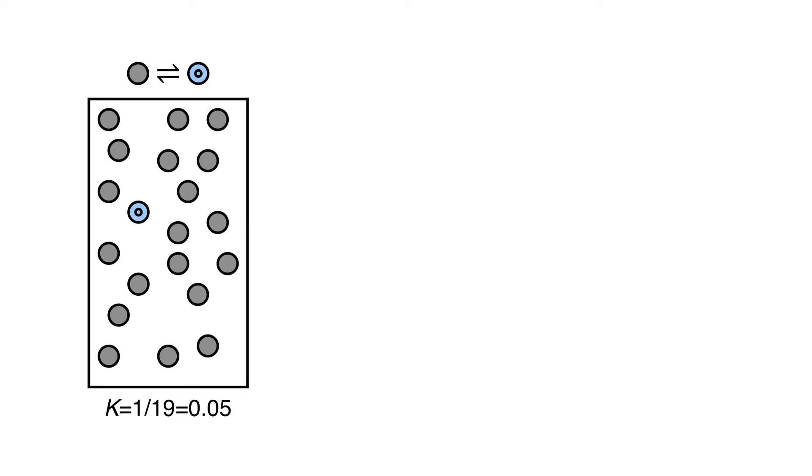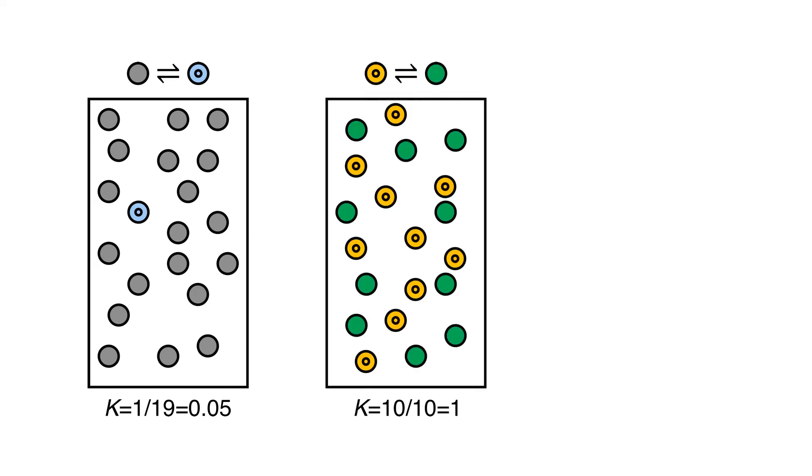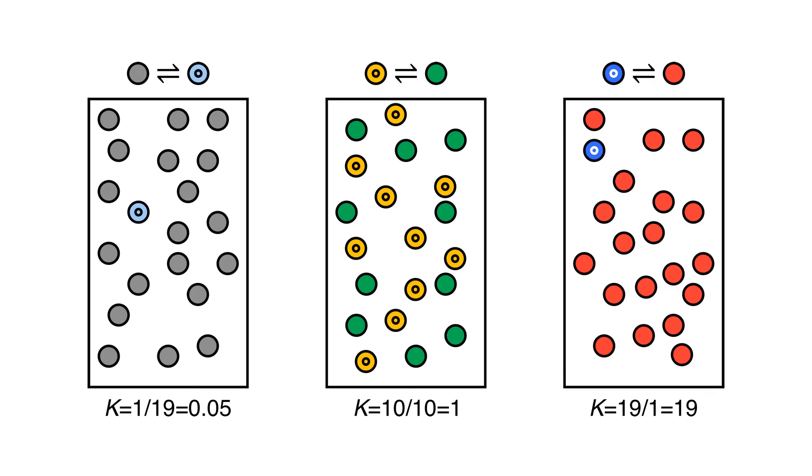How do different K values appear in closed systems at equilibrium? The first has a low K value, as the concentration lies heavily to the reactant side. In the center, we have a K value of 1 as the concentrations of the reactants and products are equal. On the right-hand side, we have a high K value as the equilibrium lies to the right and the formation of the products is favored.